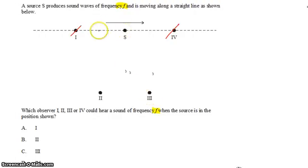So the source was maybe somewhere over here when the wave that observer 2 is now hearing reaches observer 2. And so that means that the waves that observer 2 is listening to at the moment were emitted when the source was moving tangentially to its position. So it's observer 2 who could hear a frequency f.